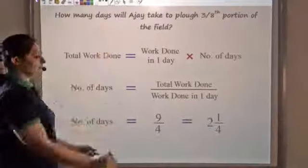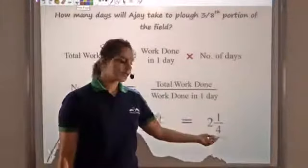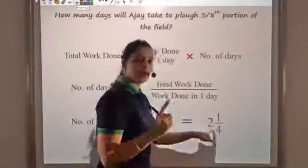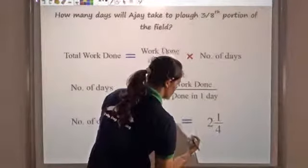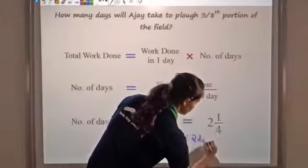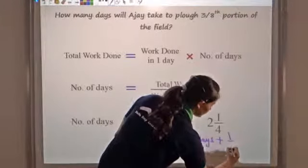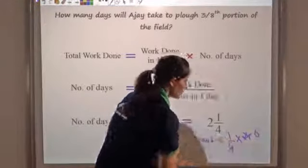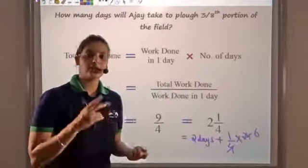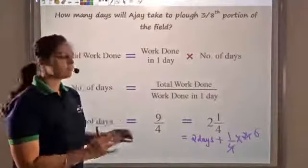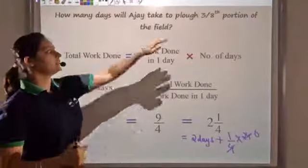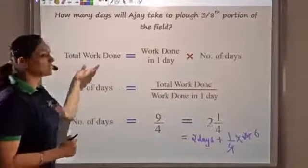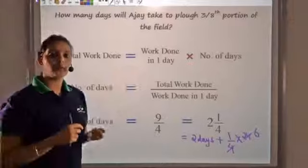Number of days is nine by four, which is two and one quarter — that is, two complete days and one fourth of a day. One day has twenty four hours, so one fourth of a day is six hours. So he will take two complete days and six more hours to complete three eighths of the field. This is how you can use this basic formula to solve any time and work question.